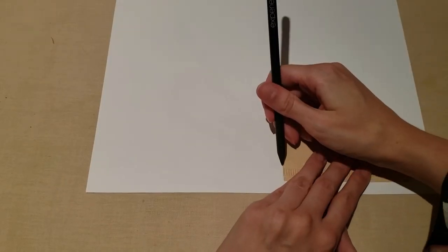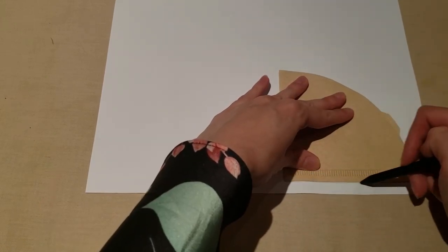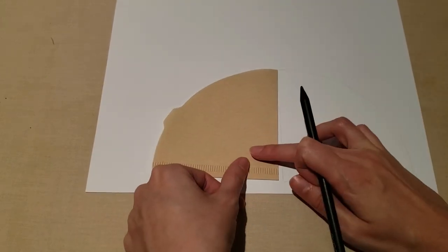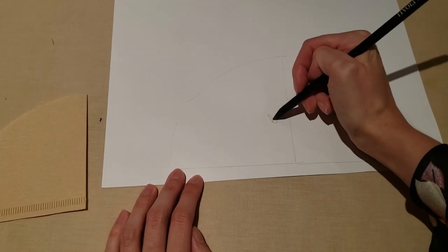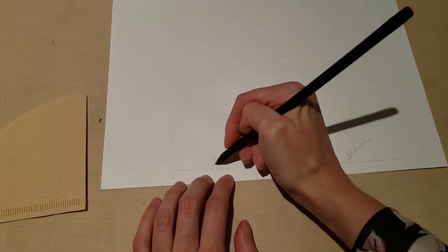If you already have a paper filter, you can trace it onto paper to make a template that you'll use later to cut out your fabric. Be sure to mark where the fold of the paper filter is and where the stamped seam is.